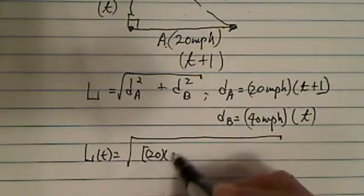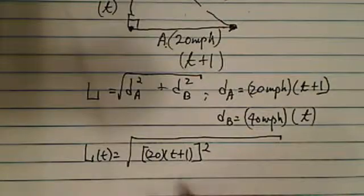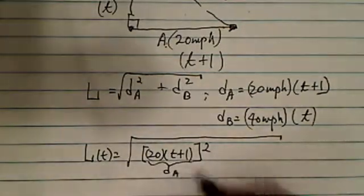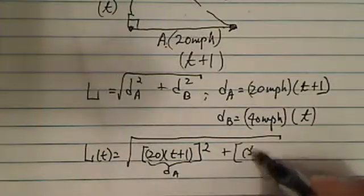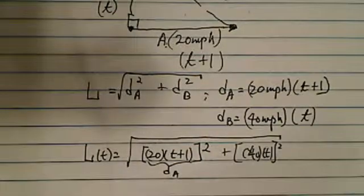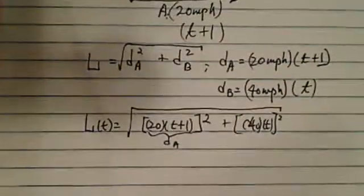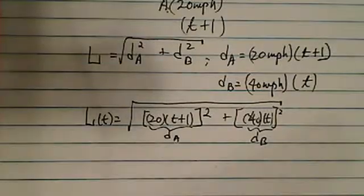So we have 20 times T plus 1, the whole thing is squared. That's my distance of A. And then plus distance B, which is 40 times T, this whole thing is squared. That's the distance between the two points.